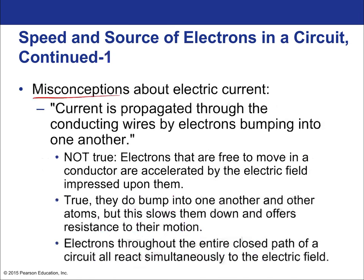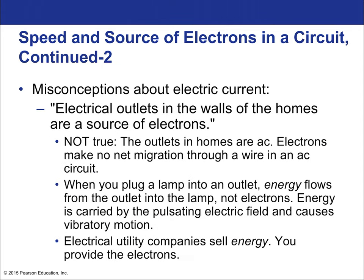Common misconceptions about electric current: it is not true that current propagates through a conducting wire by electrons bumping into one another. The electrons are accelerated by the electric field impressed upon them. It is true that they bump into one another and other atoms, but this slows them down and offers resistance. The electrons throughout the entire closed path of the circuit all react simultaneously — it's not a domino effect. Instead, they all simultaneously start to move as they experience the electric field, which for any small-scale operation is effectively instantaneous, moving at 300 million meters per second. Also, electrical outlets in the walls are not the source of electrons — the electrons are already in the material.